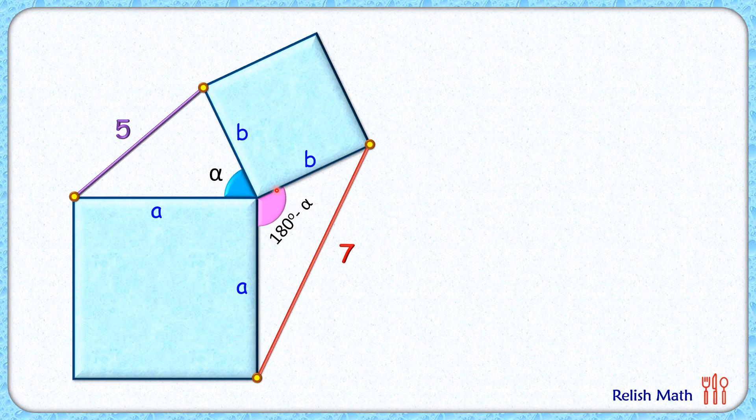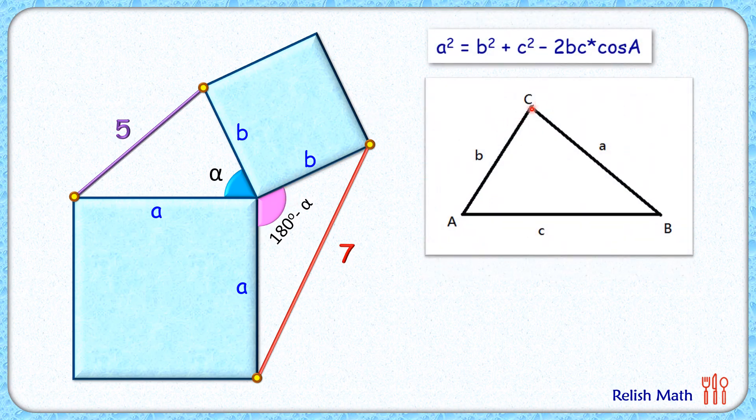To solve it further, we'll be using the cosine law, which states that for any triangle with side lengths a, b, and c, the relation between the sides and the angle holds by this equation. Now applying this cosine law